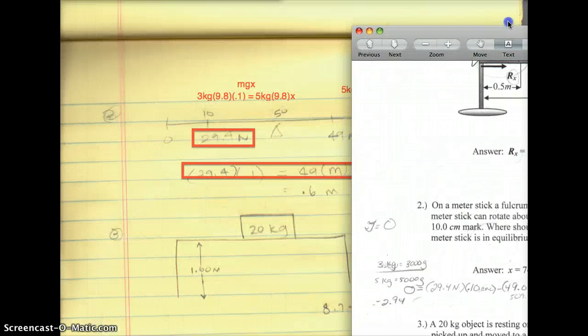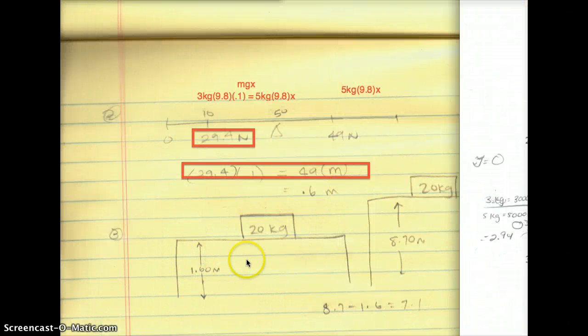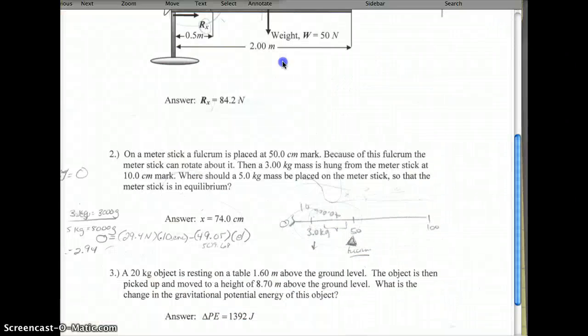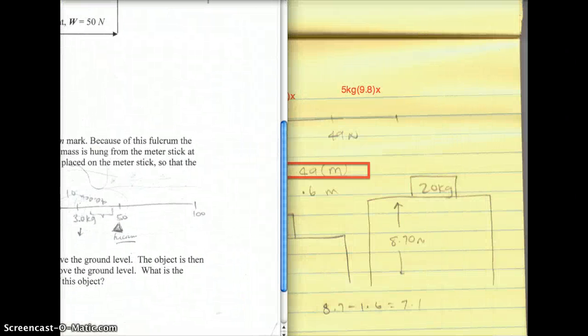Asks if a 20 kilogram object is resting on a table 1.6 meters above the ground level. So I drew up my table, it's 1.6 meters above ground level. We have a 20 kilogram object sitting on that table.